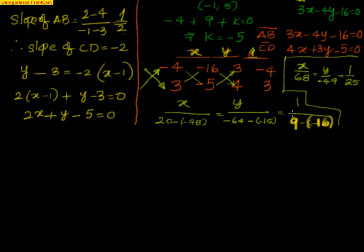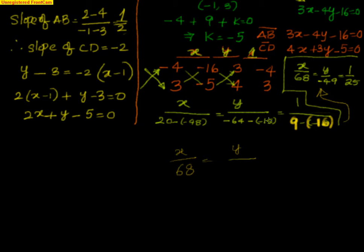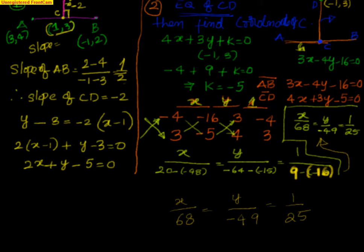Applying cross multiplication: x / (20 - (-48)) = y / (-64 - (-15)) = 1 / (9 - (-16)). Simplifying: x / 68 = y / (-49) = 1 / 25. This gives the coordinates of the foot of the perpendicular.